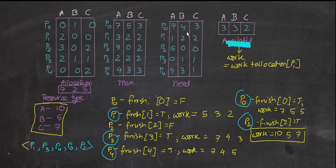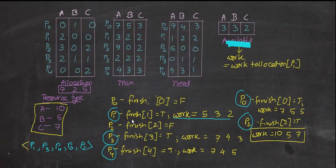Moving on to P1: P1 needs 1,2,2 and we have 3,3,2 available. The need array is less than available, meaning we have enough resources for P1, so it can be executed. We then update the work array: work equals work plus allocation of that process. Work is initially equal to available.